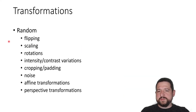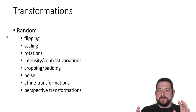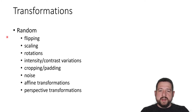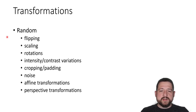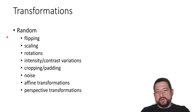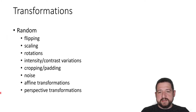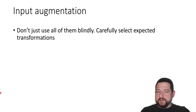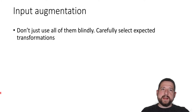Examples of image augmentations include: flipping horizontally or vertically, scaling, rotating, changing intensity and contrast, cropping or randomly padding, adding noise at different levels, affine transformations, and perspective transformations. You should only use those transformations you actually expect in your test set — there's no point doing very random perspective transformations if you'll never observe them in the real world. Carefully select only the transformations you'd expect in a real-world scenario.